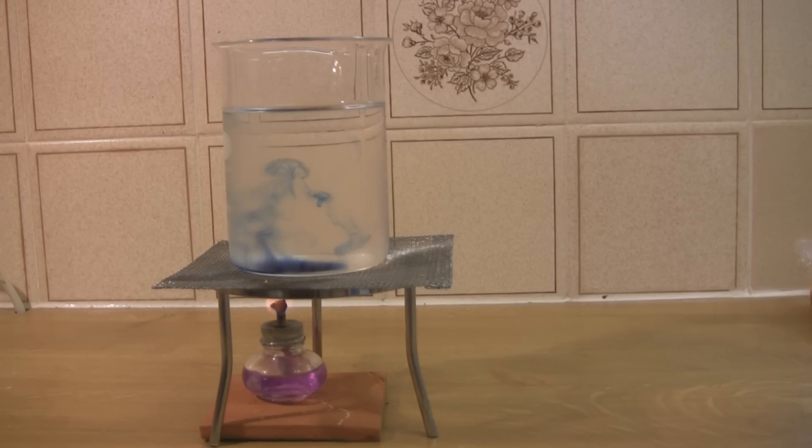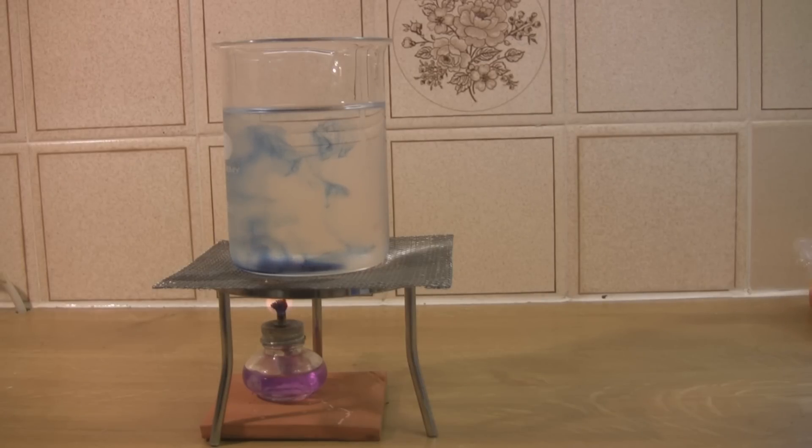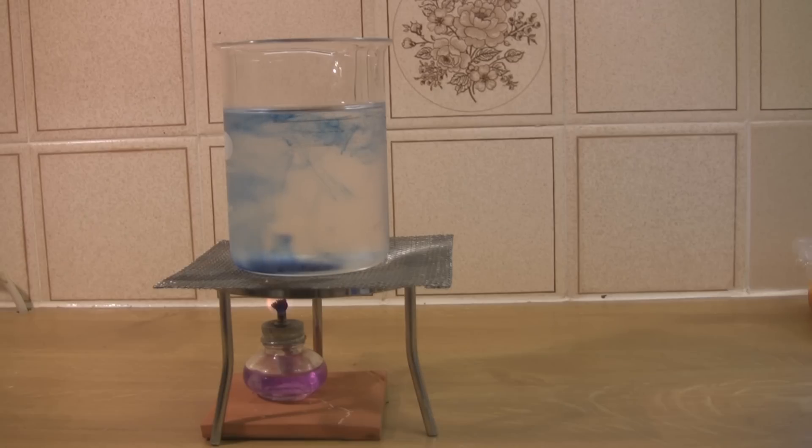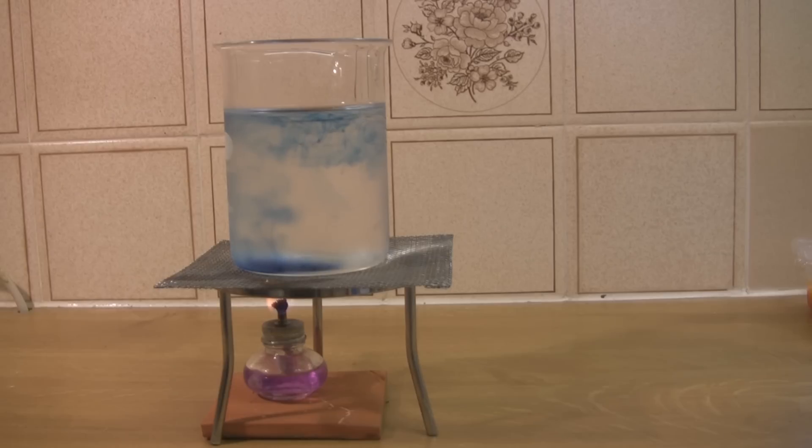When it gets to the top of the water, it starts to cool down and becomes more dense, so it sinks back down. Because we're only heating one side of the container, it creates a current all the way around the water. It rises up, and as it cools, it moves over and sinks back down.